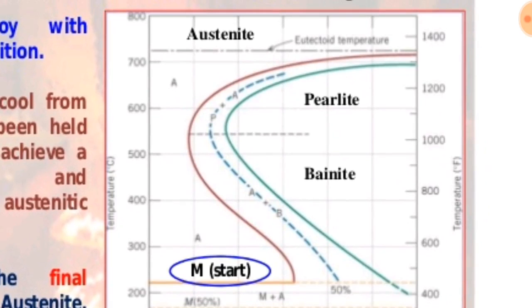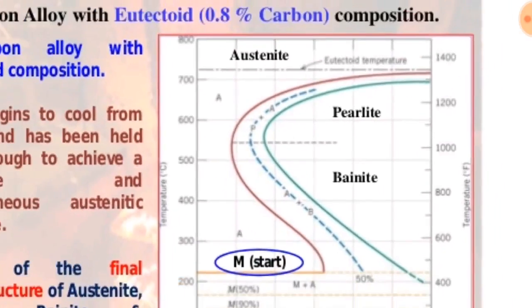Above 1400 degrees Celsius, which is the eutectoid temperature, the austenite phase appears.